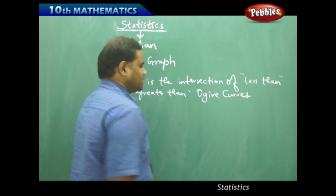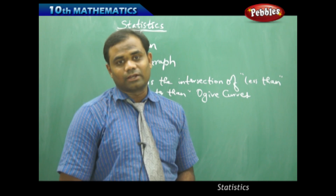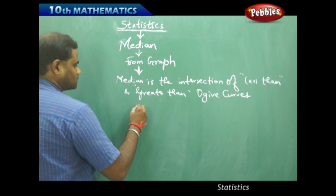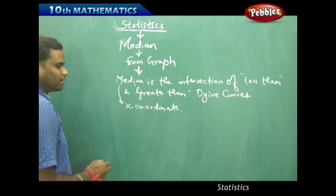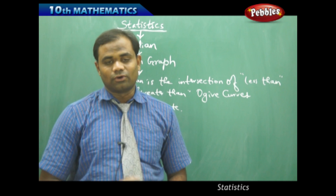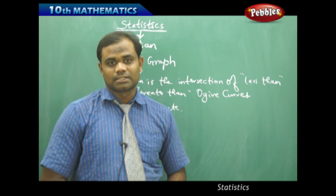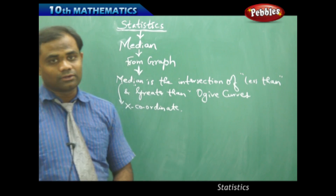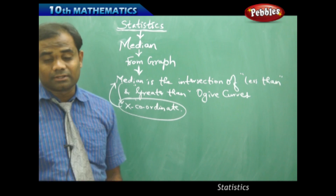The point of intersection of less than and greater than ogive curves gives us the median, which is the x-coordinate — that is, we get the median on the x-axis as identified through the ogive curves. So let's see how we can identify the median using this definition for the previous two example problems: the less than and greater than ogive curves for the marks obtained and number of students in the class. We calculate the median graphically by finding the point of intersection and thus the x-coordinate which decides the median.